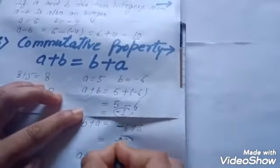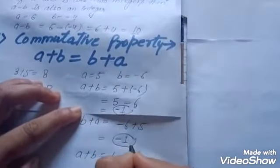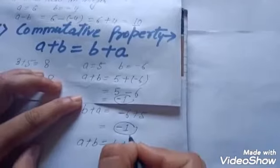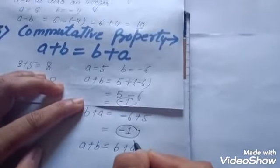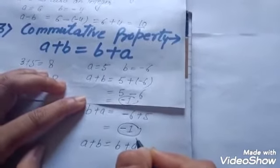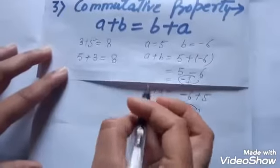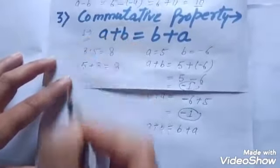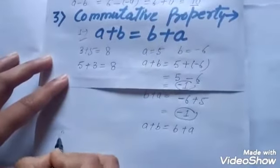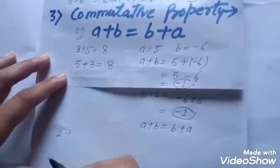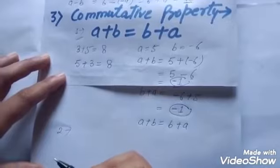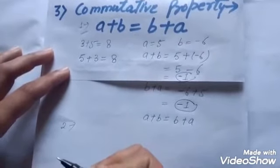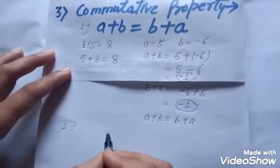So we can say that addition is commutative for integers. Now the second point: we know that subtraction is not commutative for whole numbers — is it commutative for integers?